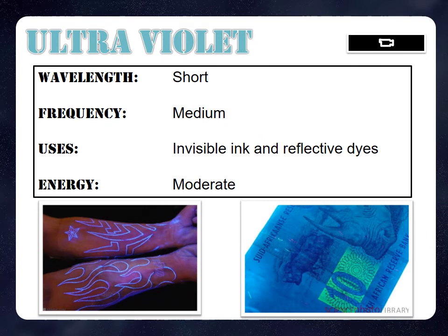Ultraviolet light has a short wavelength and medium frequency. It's used for invisible ink and reflective dyes — for example, to check whether paper currency is fake using UV dyes under a UV lamp. It has moderate energy.